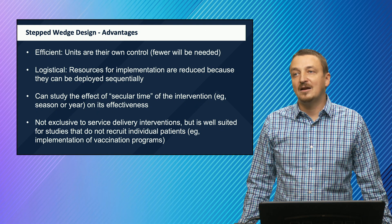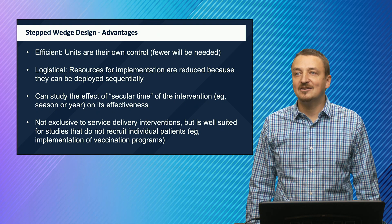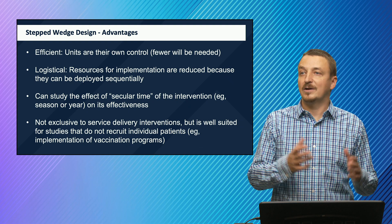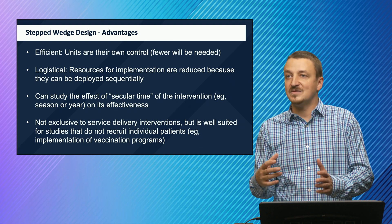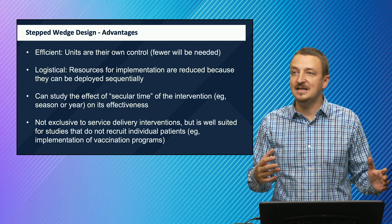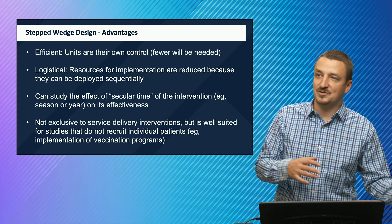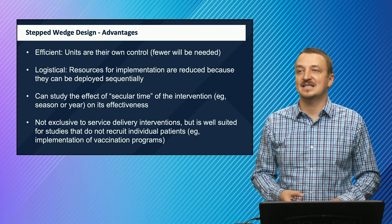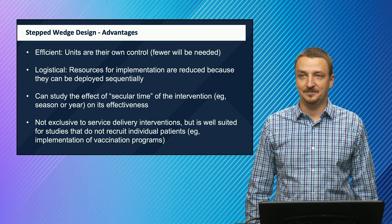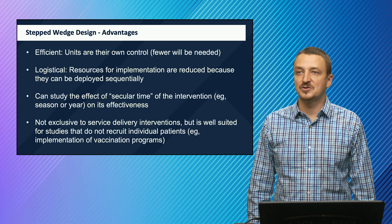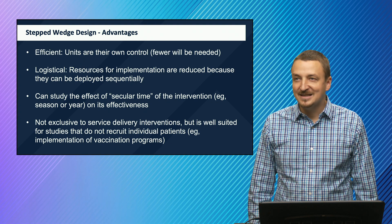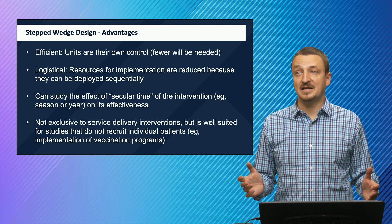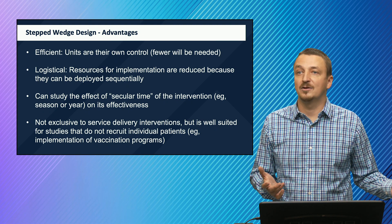A stepped wedge design can also be used when the intervention has a secular time component—for example, a season or a year. Think about influenza, which typically occurs in winter months. In a multinational study enrolling countries like Australia and the United States, seasons occur at different time points, so a stepped wedge design would work well. Importantly, it is not exclusive to service delivery interventions; it is also well suited for studies that do not recruit individual patients, such as implementation of a vaccination program.